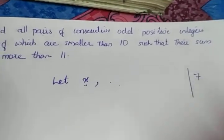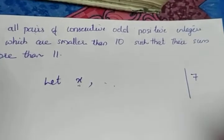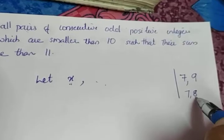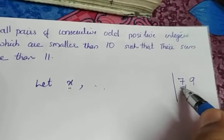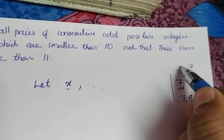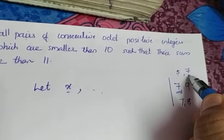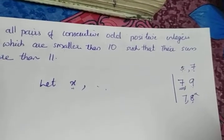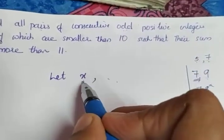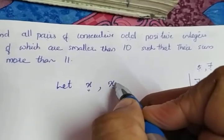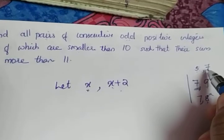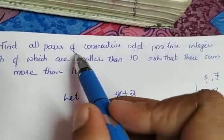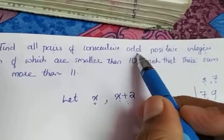Odd positive integers — you have to be careful. Suppose I take 7 as an odd positive integer. Which is the next consecutive odd positive integer? It is 9. The next consecutive integer is actually 8, but it is not an odd number, so the next consecutive odd integer is 9. For example, 5 and 7 are consecutive odd positive integers, and 7 and 9 are also. So if I take X as one odd positive integer, the next must be X plus 2, because 7 plus 2 gives you 9. To avoid a negative sign I am taking the numbers as X and X plus 2.